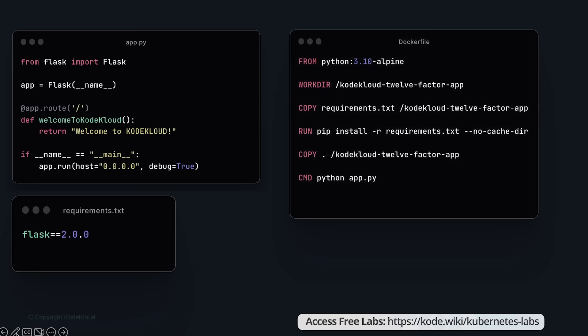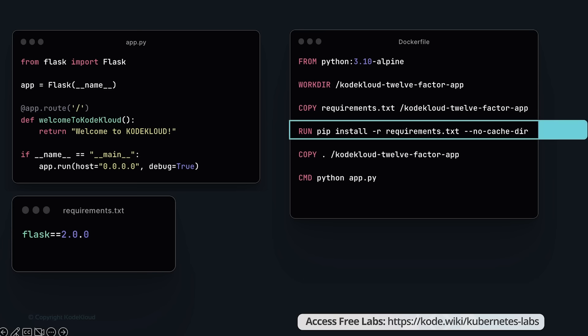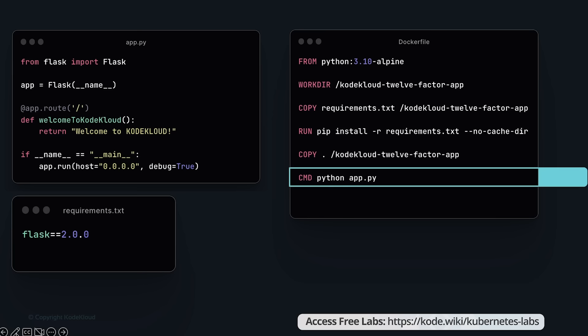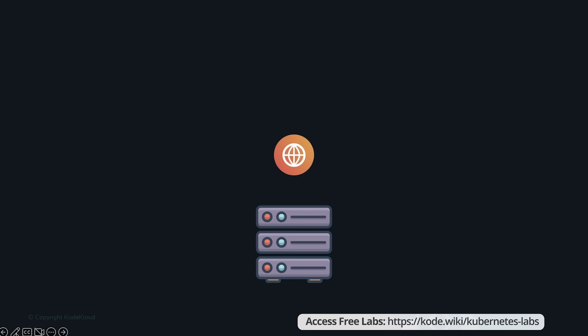Here we have our application code and a requirements.txt file with all the dependencies — in our case, just the Flask dependency. We build a Dockerfile to package the application with its dependencies into a Docker container. The first line creates an image from the Python base image, sets the working directory, copies the requirements.txt file, and installs the dependencies. Then it copies the application code into the image, and finally defines the command to run the application using the CMD instruction. By running docker build we build an image, and by running docker run we run one instance of our application.